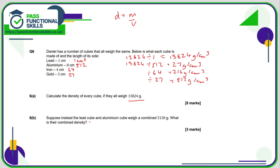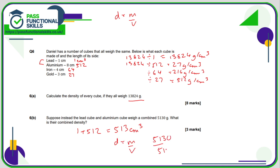Suppose instead the lead cube and aluminium cube weigh a combined 5,130 grams. What is their combined density? First, let's work out their combined volume: 1 plus 512 gives 513 cubic centimetres. So the density is the mass divided by the volume: 5,130 divided by 513, which works out to a quite neat 10 grams per cubic centimetre.